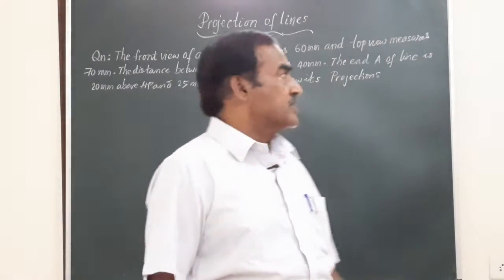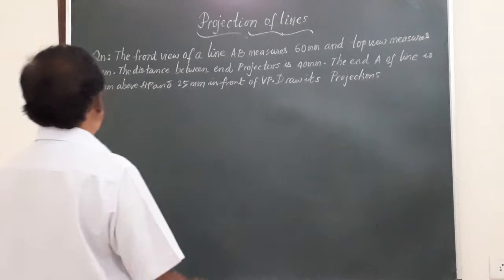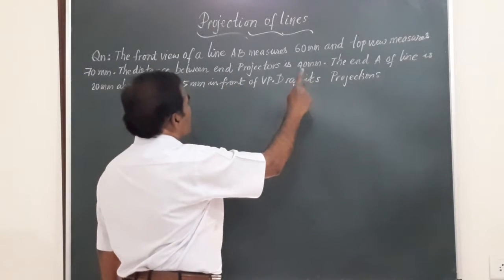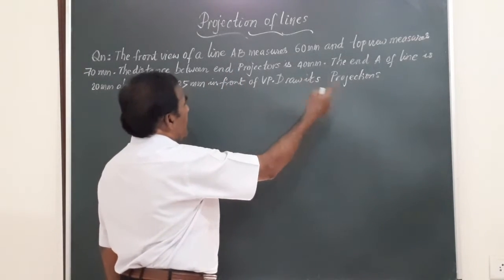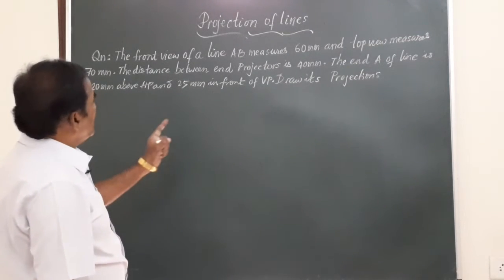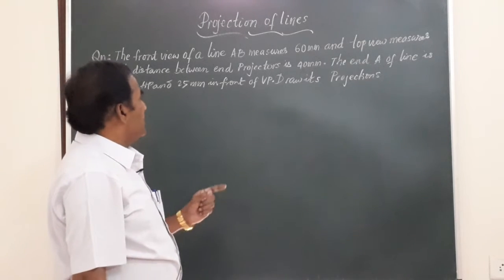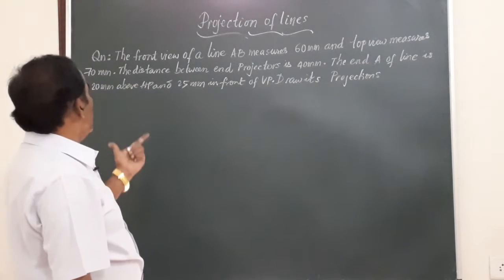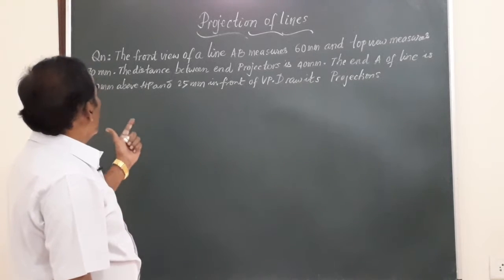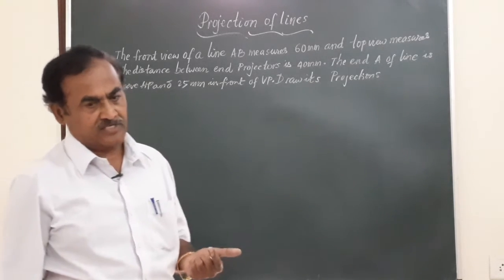The problem for today's session runs like this. The front view of a line AB measures 60 mm and top view measures 70 mm. The distance between the end projectors is 40 mm. The end A of the line is 20 mm above HP and 25 mm in front of VP. Draw its projections.